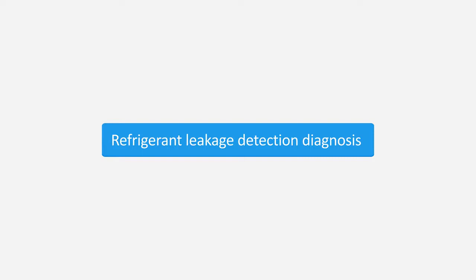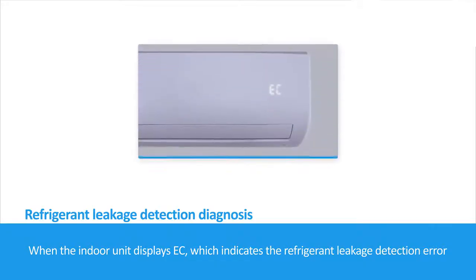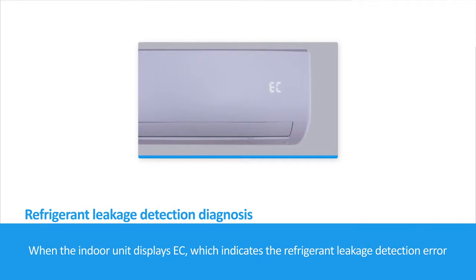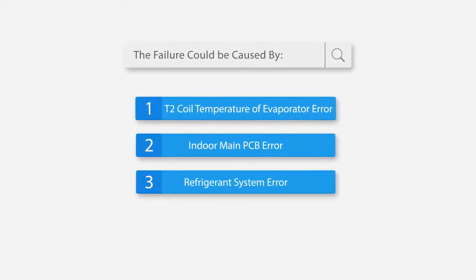Refrigerant Leakage Detection Diagnosis. When the indoor unit displays EC, which indicates the Refrigerant Leakage Detection Error, the failure could be caused by: 1. T2 Coil Temperature of Evaporator Error, 2. Indoor Main PCB Error, 3. Refrigerant System Error.